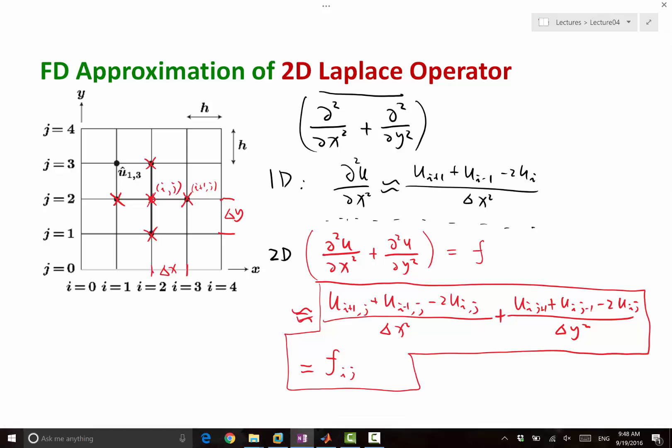So if we have nx minus 1 interior grid points in x, we have ny minus 1 interior grid points in y. This is not a single equation. This is nx minus 1 times ny minus 1 equations.